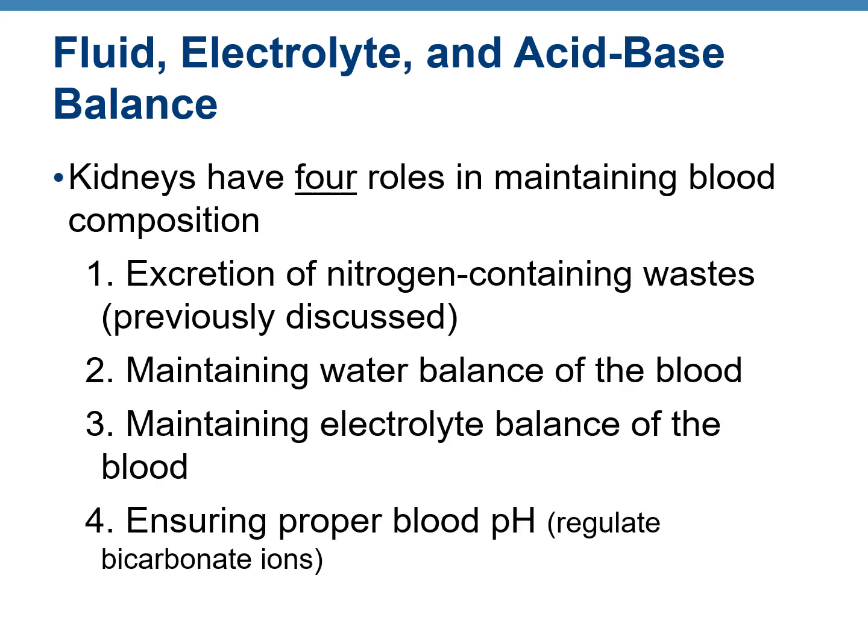Fluid, electrolyte, and acid-base balance is maintained by the kidneys in four ways: first, the kidneys excrete nitrogenous waste products such as urea, uric acid, and creatinine. The amount of water excreted in urine dictates the water balance of the body. Along with water, ions and electrolytes are also excreted, maintaining electrolyte balance. Lastly, urine maintains proper blood pH by regulating how much bicarbonate is excreted.